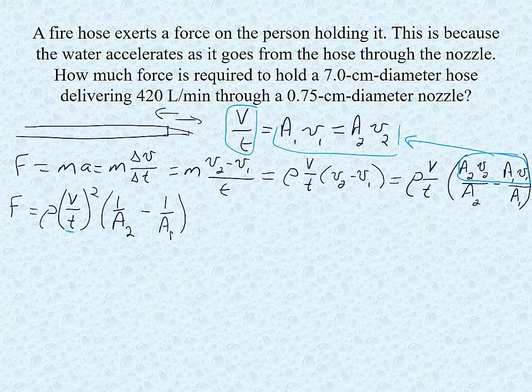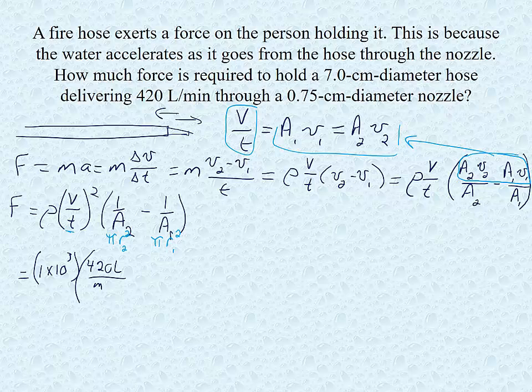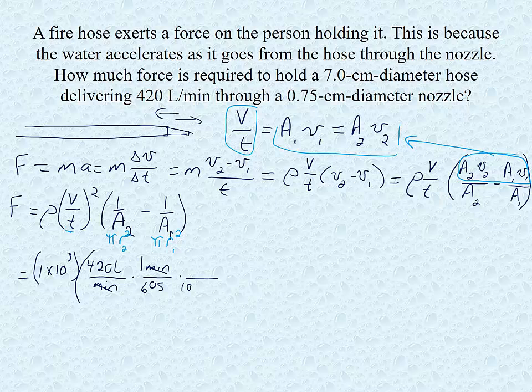And we know that a2 is going to be pi r2 squared and a1 is going to be pi r1 squared. So now we're finally at the point where we can add numbers to this. So we're talking about water again. So 1 times 10 to the 3rd times the volume flow rate. It's given in liters per minute. We need it in cubic meters per second. So 420 liters per minute times 1 minute has 60 seconds. And 1000 liters is a cubic meter.